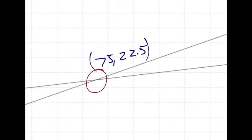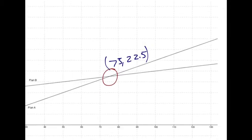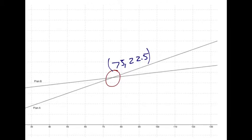What does that mean? In context of the problem. It's a solution, sure. But what does it mean in context of the problem? So after 75 minutes, it costs 22.5 for both plans, for either plan. But after that point, B is... yeah, after this point, B is cheaper. Before this point, A is cheaper. You guys all get that? Okay, so this is the crossover point. This is the point at which plan A will become more expensive, and plan B will become cheaper. Whereas prior to that, it's the reverse.